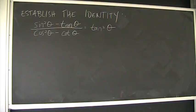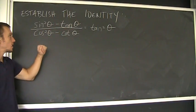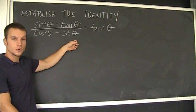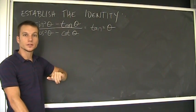Okay, next problem. Directions are to establish the identity. Sin squared theta minus tangent theta divided by cosine squared theta minus cotangent theta equals tangent squared theta.